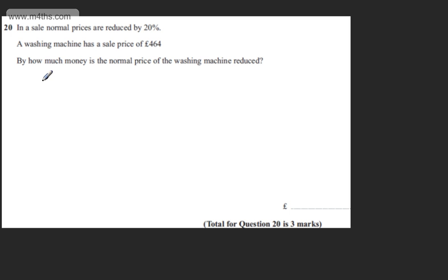So this is reverse percentage. What I'm going to say then is the price of a washing machine, W, was multiplied by 0.80 and that gave us 464. All I'm looking at here is the multiple for a 20% reduction.